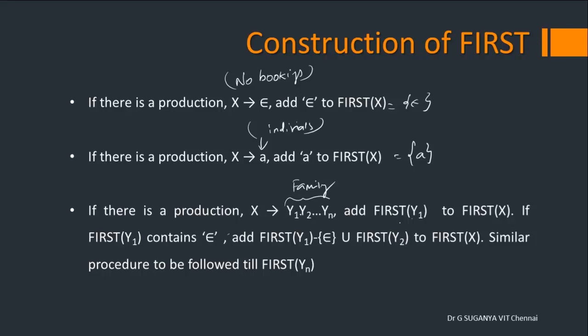If Y1 is a non-terminal, add its FIRST to FIRST of X. If FIRST of Y1 contains epsilon — meaning this family or person doesn't turn up — then automatically there is a provision for Y2 to come in first position. So Y1 may also come first; if Y1 didn't come, Y2 can be treated first; if Y2 didn't come, Y3 may also be treated first, and so on. Hence if FIRST of Y1 contains epsilon, add FIRST of Y2, excluding epsilon, to FIRST of X.